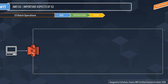S3 Batch Operations perform large-scale batch operations on Amazon S3 objects and can execute a single operation on a list of S3 objects that you specify. S3 divides batch operations into three parts. A job is the basic unit of work and contains all the information needed to execute a specific operation on objects. An operation is a type of API action, such as copying an object, that the job executes — each job performs a single type of operation across all objects. A task is a unit of execution representing a single call to an S3 or Lambda API operation — one task is created per object.